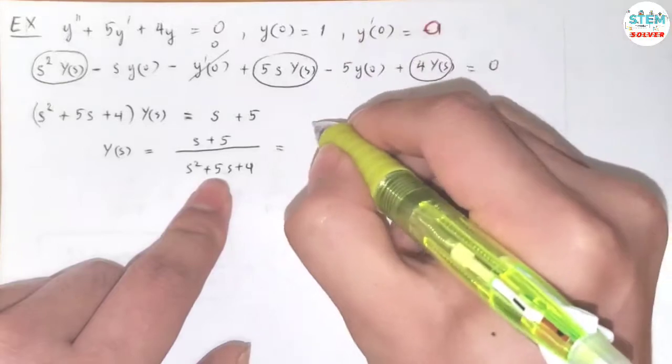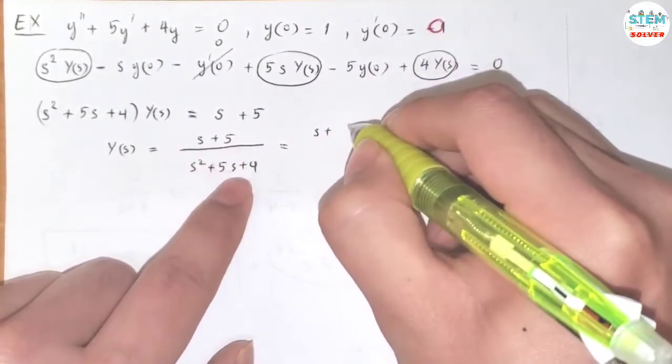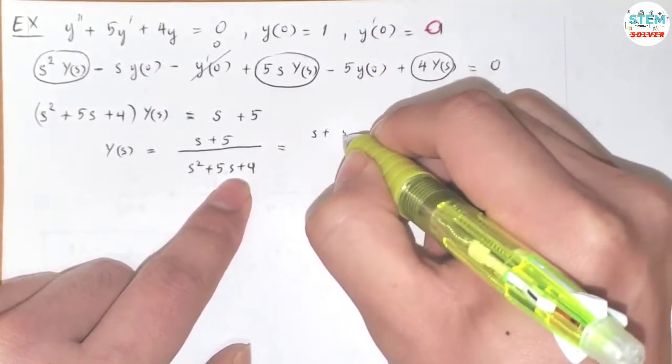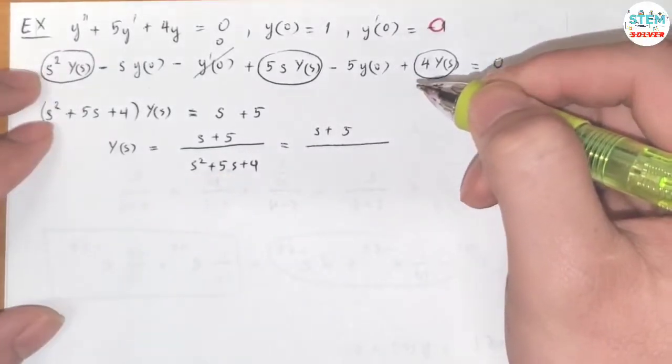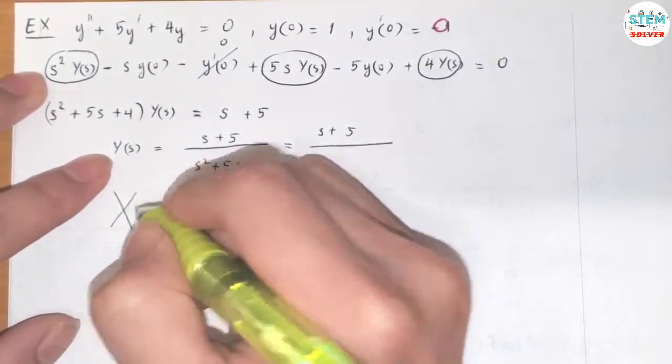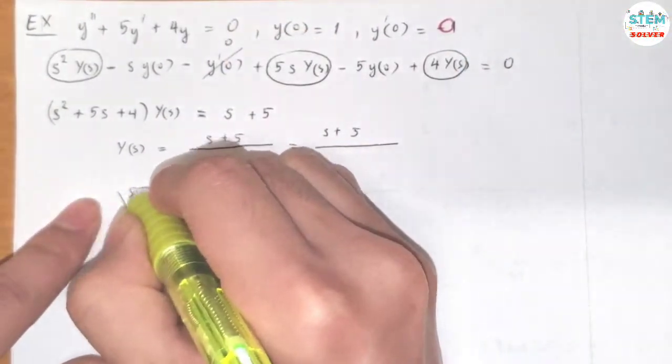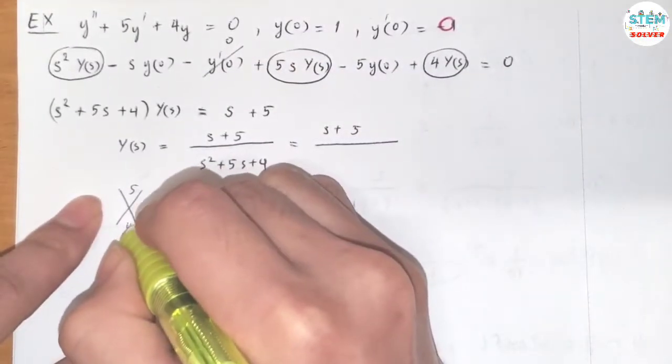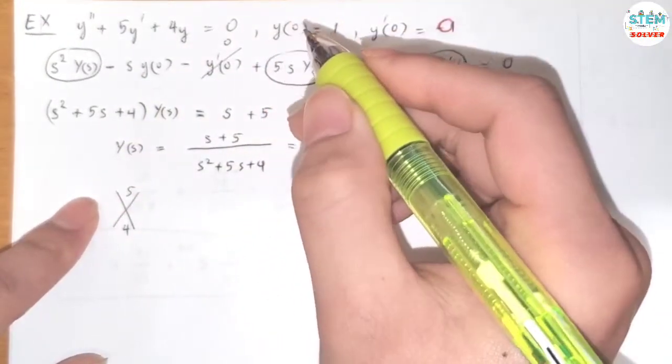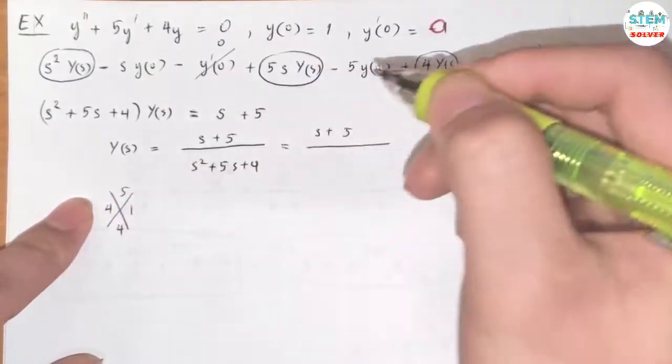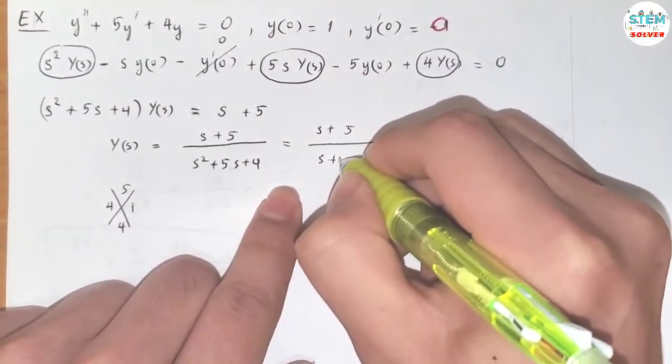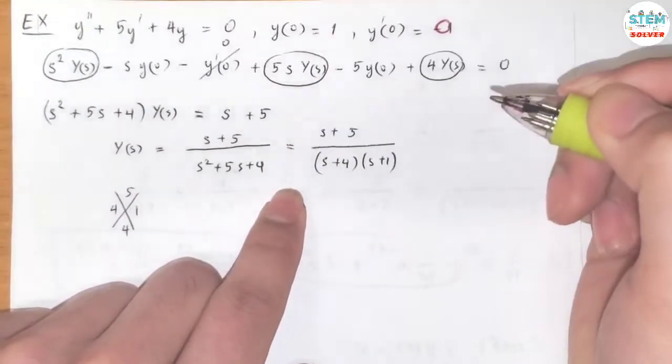I'm going to keep everything on top, not at the bottom. I'm going to use the diamond method. Two numbers add up to 5, and their product is 4, so it's equal to 4 and 1. So we have (s + 4) times (s + 1).